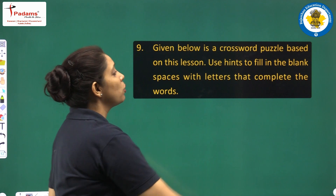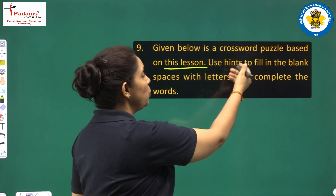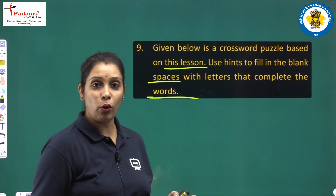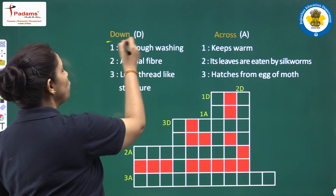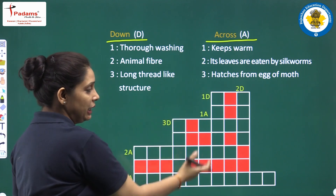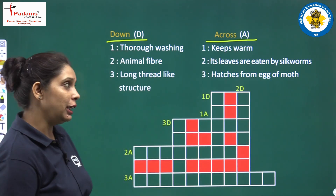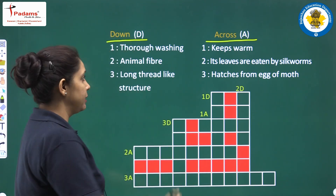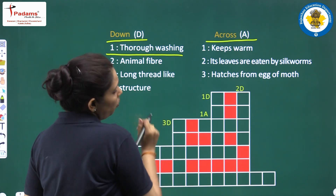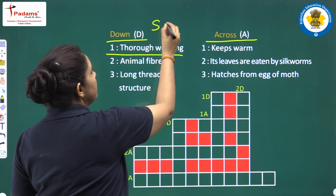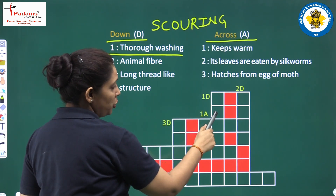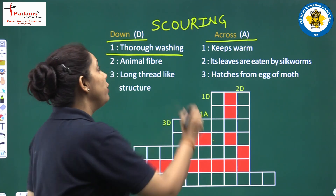Next question: given below is a crossword puzzle based on this lesson. Use hints to fill in the blank spaces with letters that complete the words. The downward hints are on one side and the across hints on the other. Let us start with the downward hints. First downward clue: thorough washing — we know that is scouring. Count the boxes — there are 5, so we write S, C, O, U, R.